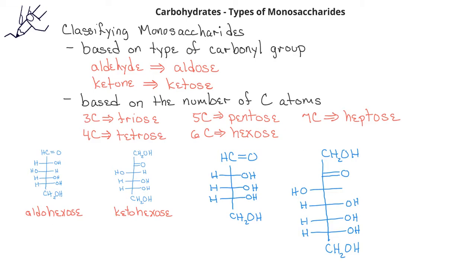This first structure has an aldehyde functional group and it has five carbons — this would be classified as an aldopentose. The second structure has a ketone functional group with a total of seven carbon atoms, and so this monosaccharide would be a ketoheptose.